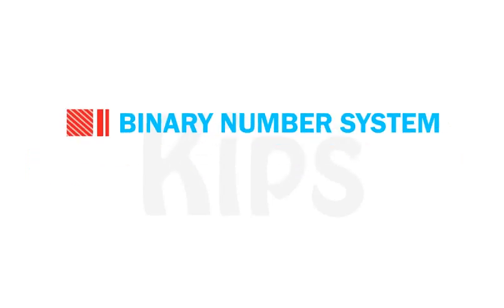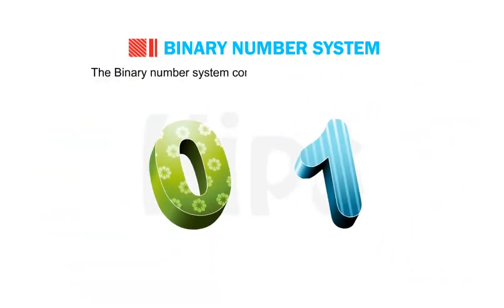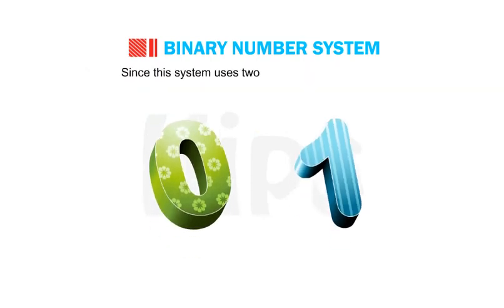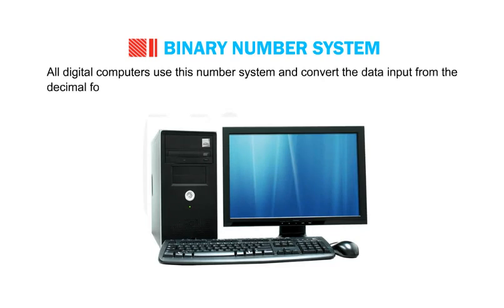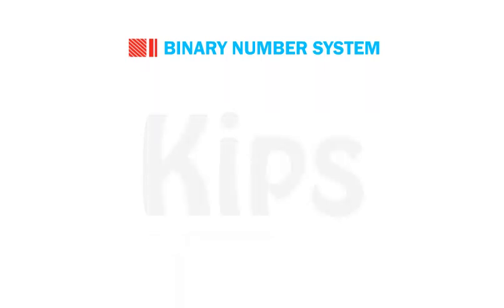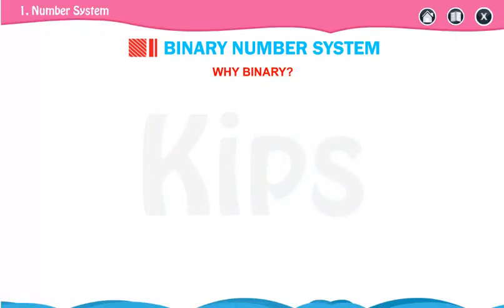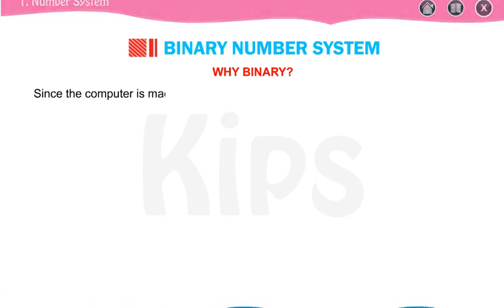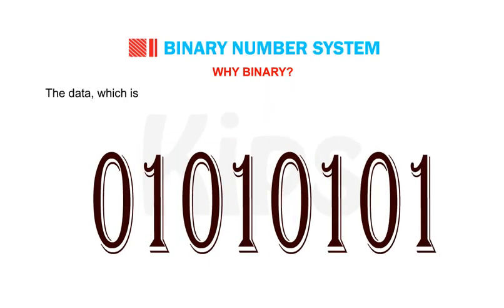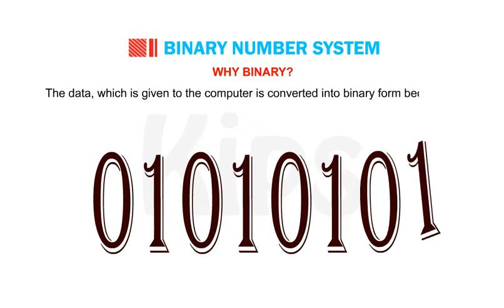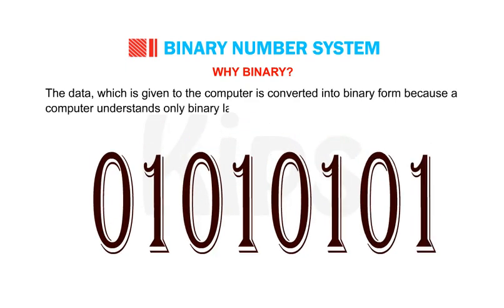Now let us find out about the binary number system. The binary number system consists of only two digits — 0 and 1. Since this system uses two digits, it has the base 2. All digital computers use this number system and convert the data input from the decimal format into its binary equivalent. The computer is made up of electronic components that can have only two states: either on (1) or off (0). The data given to the computer is converted into binary form because a computer understands only binary language.